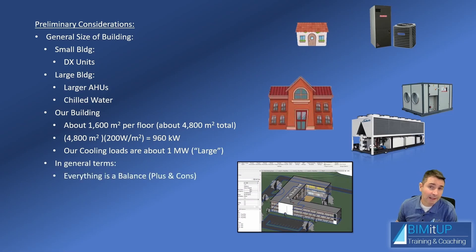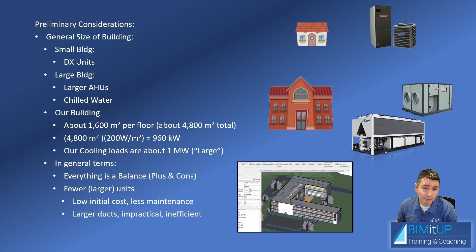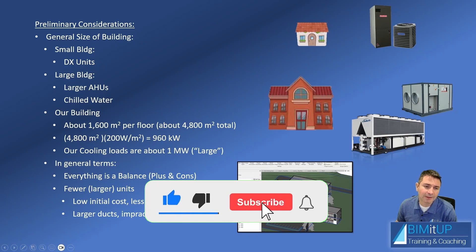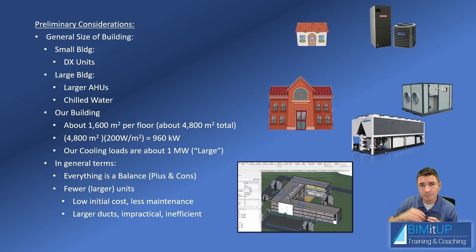In general terms, everything is a balance — there's no one size fits all. If you have fewer, larger units, you have a lower initial cost because one large unit is more cost-effective than two smaller ones, and you have fewer fans and belts to maintain. On the other hand, you end up with larger ducts, it becomes impractical to place a huge unit on the roof, and long-term it can be slightly more inefficient because you have less zoning control. With just one large unit, even though you have VAVs, there's always a minimum flow due to outside air.